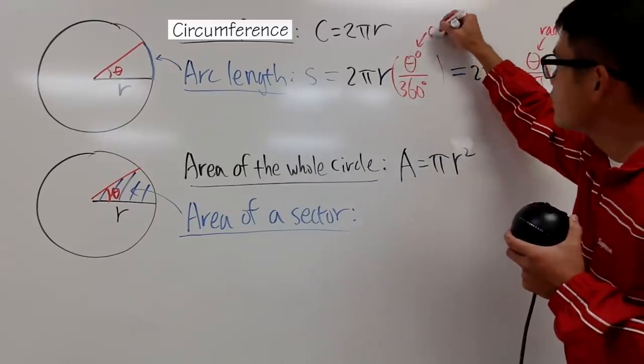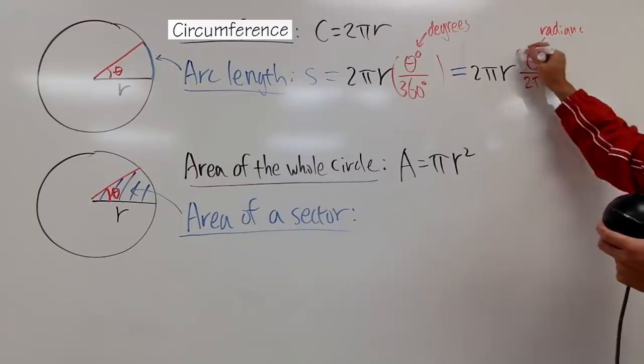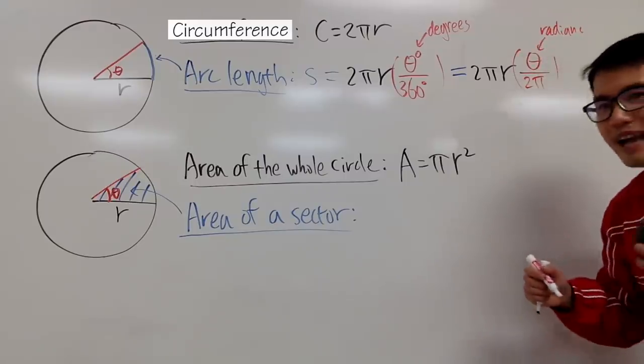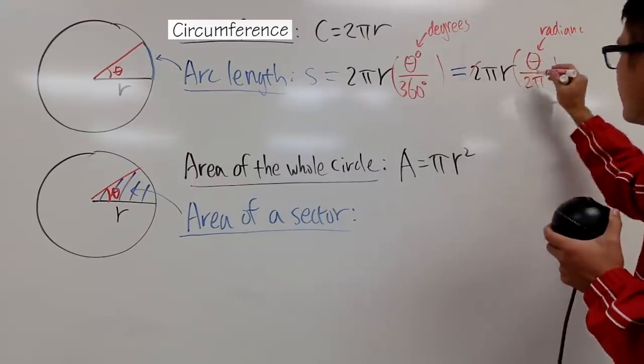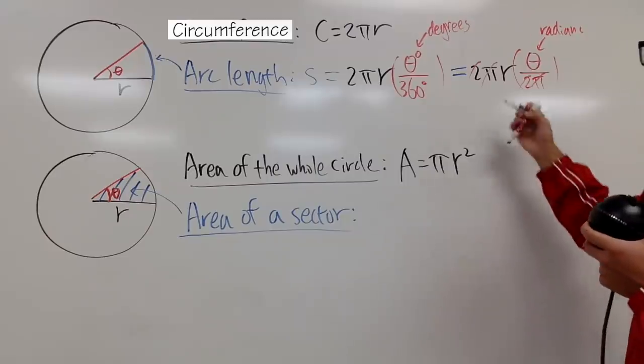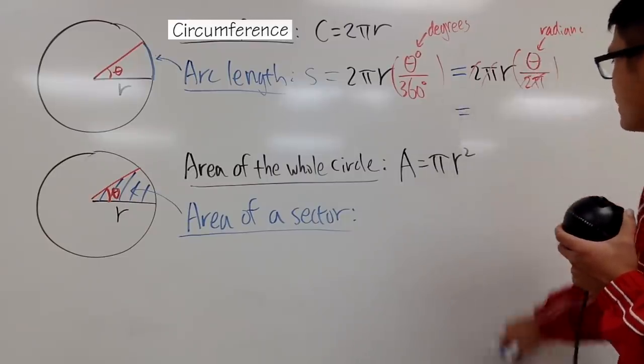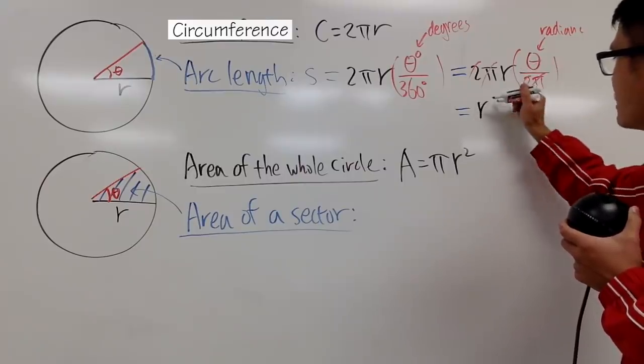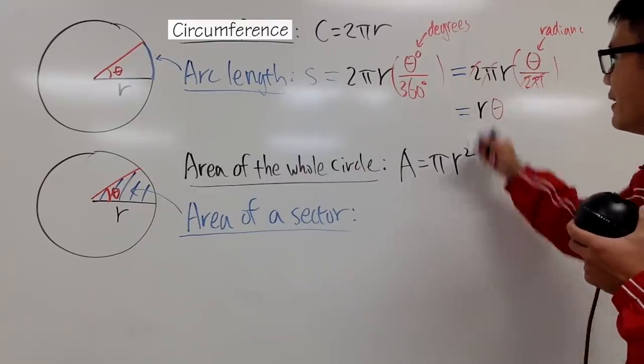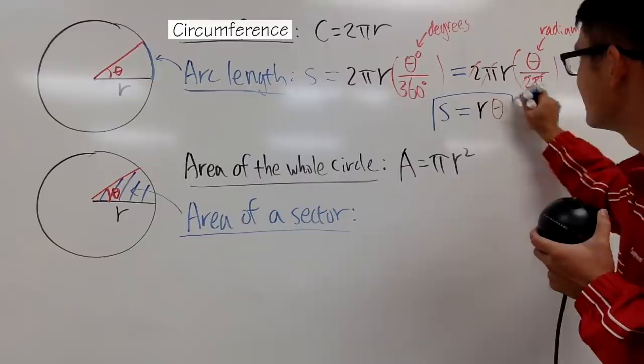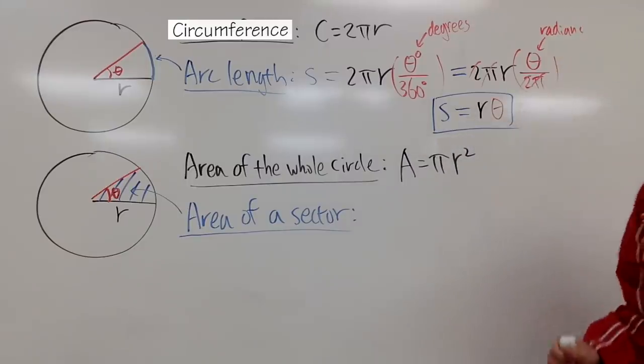And, once again, this was in degrees. And, here's the deal. When you use radians, this is so nice, because 2, 2, π, π, they all cancel. So, perhaps, this is prettier, because you end up with just r times θ for the arc length. And, this is the one that we'll be using a lot.